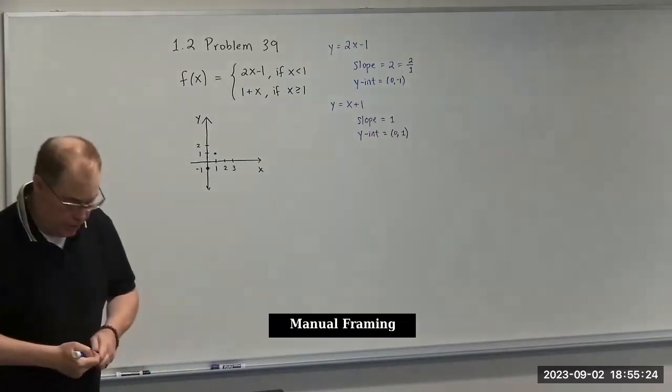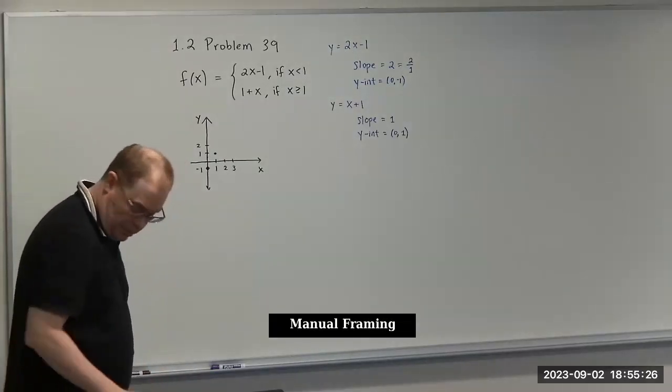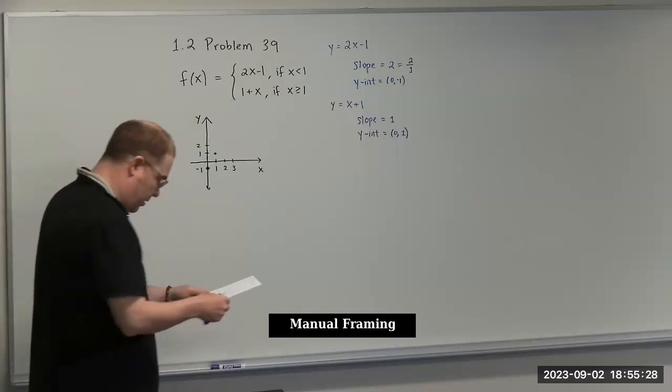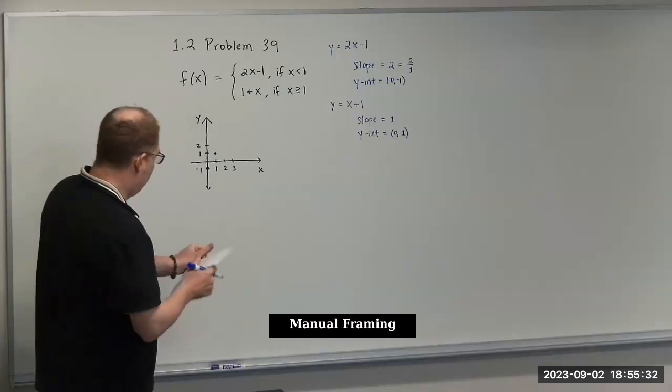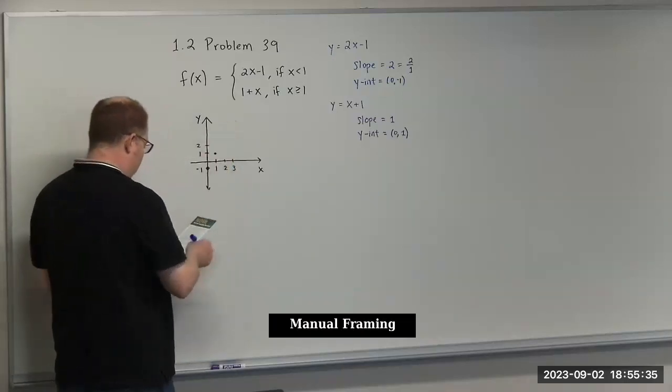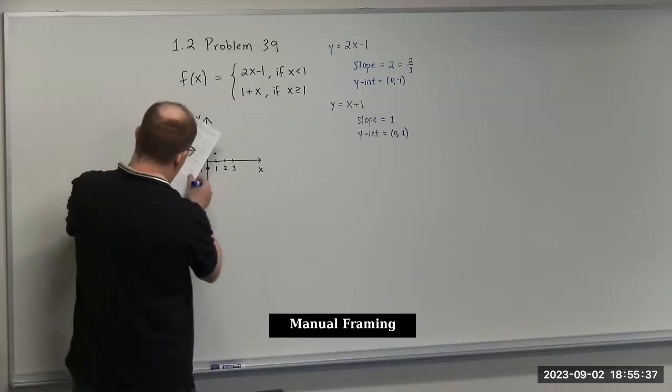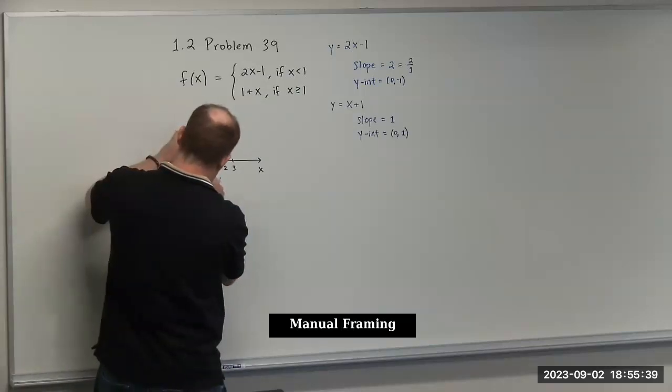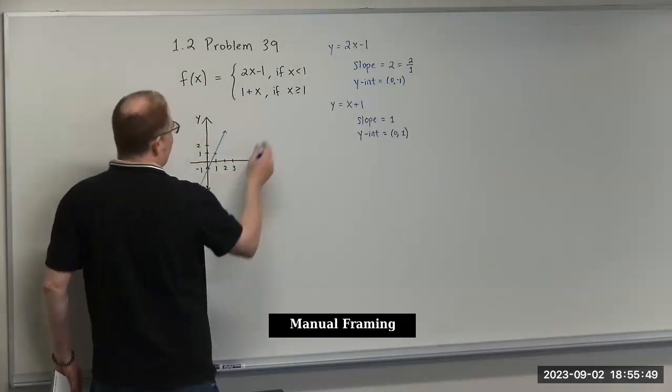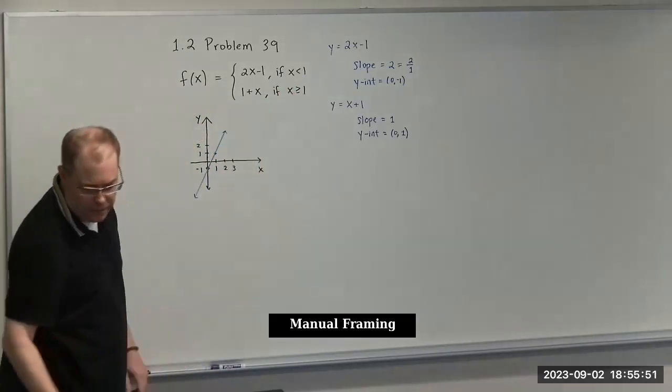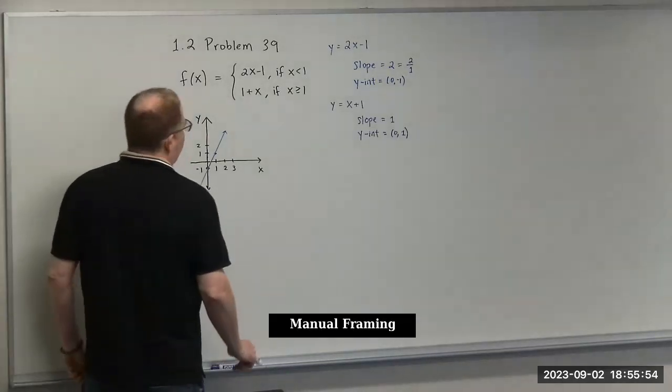Now we have our 2 points. I got my straight edge here because I'm not very good at just drawing lines with my free hand. We're going to go back and look at our restrictions.